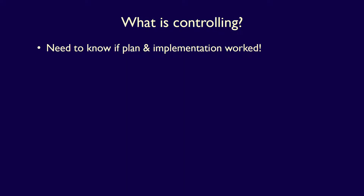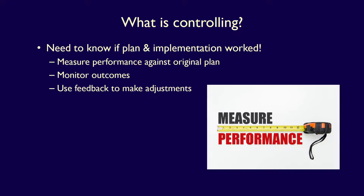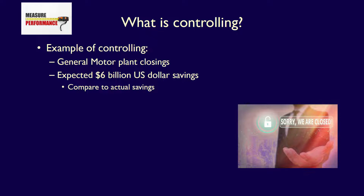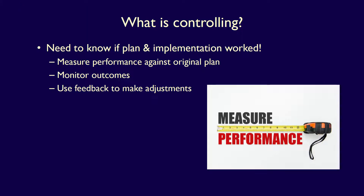What is controlling? How do we know if an organization's plans are implemented properly, or if the organization's goals are actually attained? We can only figure that out if we measure our performance against the original plan and monitor the outcomes. Once we have the results of that comparison — called feedback — we can make adjustments by changing the plan. For instance, after General Motors closed the Oshawa and four US facilities, management would have compared their expected $6 billion US savings to actual savings, to determine if predictions turned out to be true. This gives management an opportunity, given the feedback, to make additional changes if the plan is not working as expected. That's controlling — comparing actual results with predicted results, obtaining feedback, and making further adjustments.